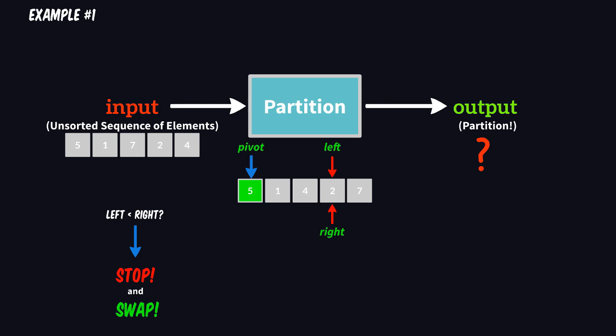We can see that all the elements greater than the pivot, which is five, are on its right side, and all the elements which are smaller than the pivot are on its left. And that's exactly what we expected our algorithm to do.